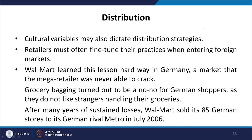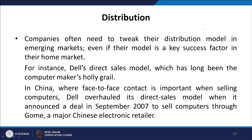Walmart learnt this lesson the hard way in Germany, a market it was never able to crack. Grocery bagging turned out to be a problem for German shoppers, who do not like strangers handling their groceries. After many years of sustained losses, Walmart sold its 85 German stores to its rival Metro in July 2006. Companies often need to tweak their distribution models in emerging markets, even if that model is a key success factor in their home country.